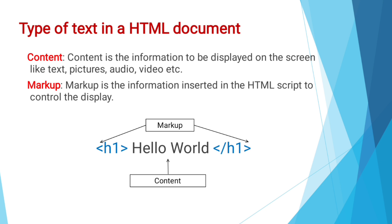We only see the content in the output. The markup part is understood by the browser and it does the formatting accordingly. For example, in this example, h1 and closing h1 are the markup, and 'Hello World' is the content. When we open this code in a browser we will see only 'Hello World' — the h1 tags will not appear in the output. h1 means heading level 1 and the browser does the formatting accordingly.